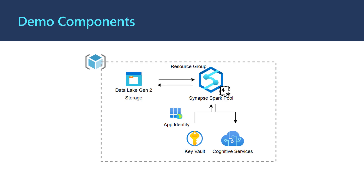A few notable things here to talk about are application identities. Synapse has an application identity that it runs under and uses to access resources. So when you provision a Synapse environment, you'll have an option to also provision a storage account to go with it. At provisioning time, if you choose this path, it will automatically provision the application identity and grant that identity access to the underlying storage to make it easy to stitch these things together. If you need to use an alternative storage account, you'll need to grant the Synapse application identity permissions to that storage account.